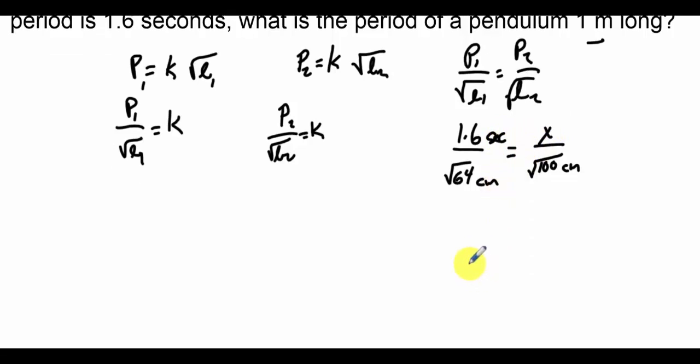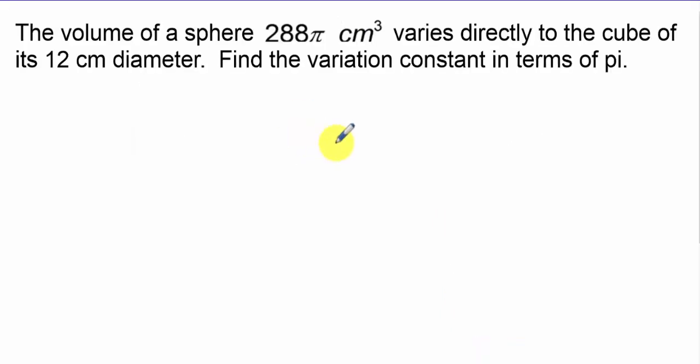I can simplify a little bit first. I have 1.6 seconds over 8 centimeters, set that equal to X over 10 centimeters. Do that cross product, I end up with 16 seconds over 8 because the centimeters reduce out, or 2 seconds. The next example talks about a direct variation and they ask us to find a variation constant.